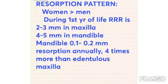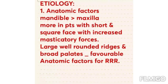Regarding the resorption pattern, residual ridge resorption occurs more frequently in women than in men. During the first year, RRR is 2 to 3 mm in the maxilla and 4 to 5 mm in the mandible. In subsequent years, it is 0.1 to 0.2 mm — about four times greater in the mandible than the maxilla.